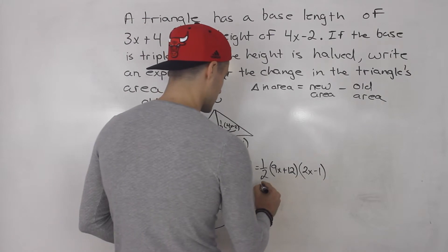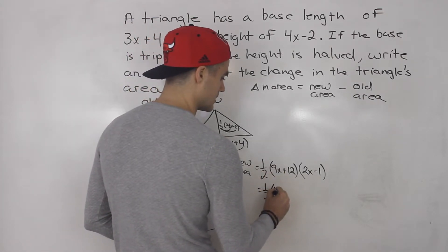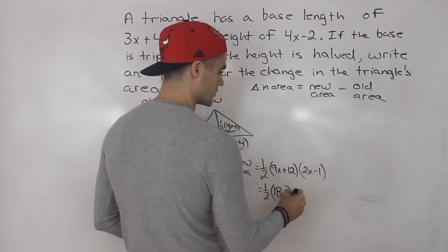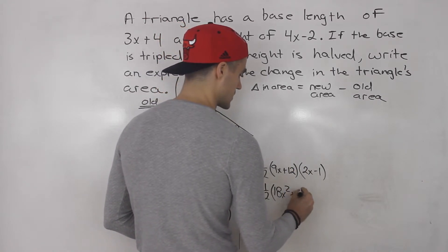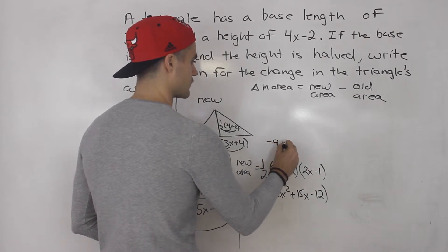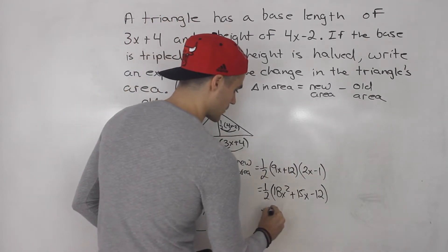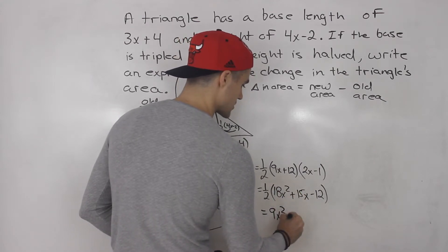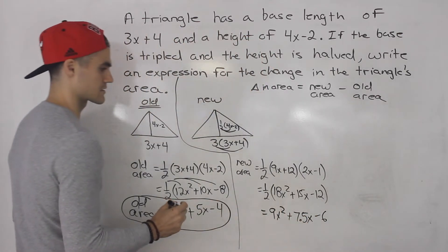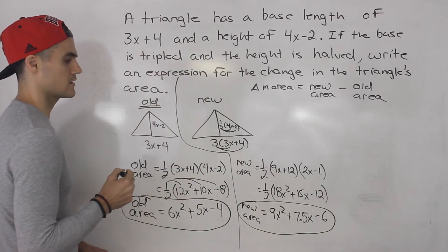FOILing out (9x plus 12)(2x minus 1) gives us 18x squared, then minus 9x plus 24x which is positive 15x, and minus 12. Distributing the one half: 18 times one half is 9x squared, 15 times one half is 7.5x, and minus 12 times one half is minus 6. So the new area is 9x squared plus 7.5x minus 6.